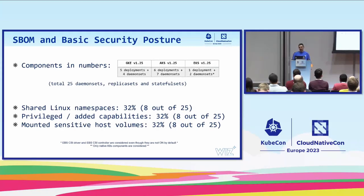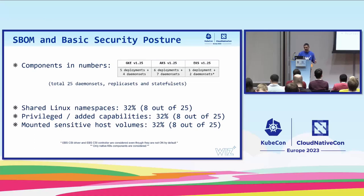We can see that the footprint is pretty serious in terms of privileges. These middleware workloads require quite serious privileges. Intuitively it's kind of okay because they probably need this to do their job, but it gives a sense of uneasiness about the impact — because after all, risk is probability times impact.